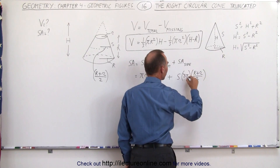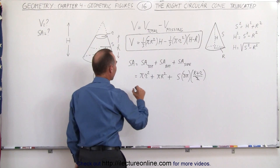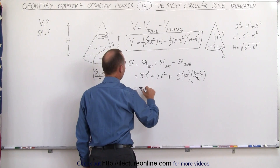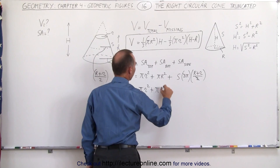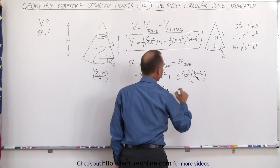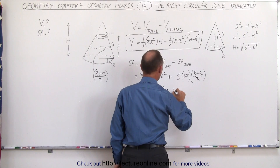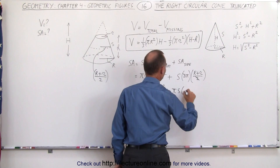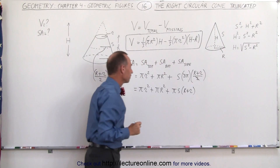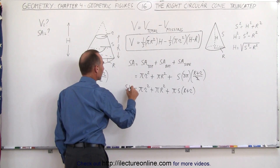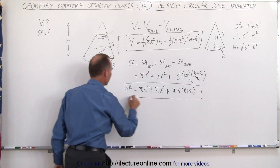The 2's cancel out, and we can then write the full surface area as: pi r-squared plus pi R-squared plus pi times s times (R plus r). And that would be the surface area of the truncated right circular cone.